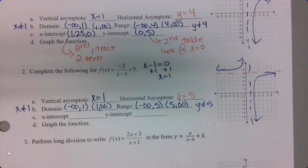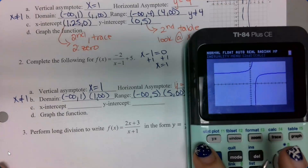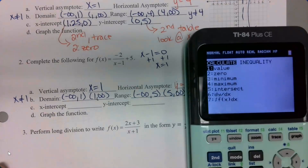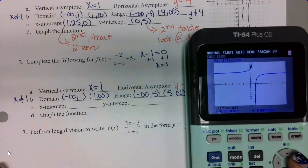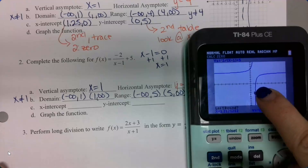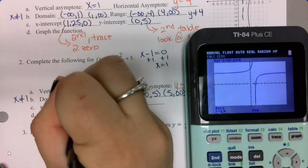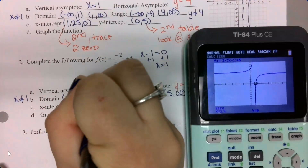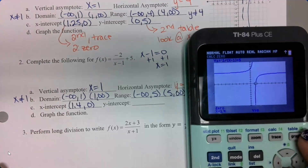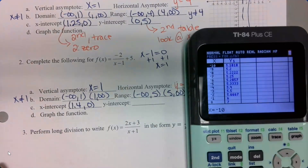My x-intercept: I go 2nd, trace, choose 0. I arrow my cursor over until it's on the left side of where it's crossing the x-axis, press enter, arrow over, cross it, and press enter. This gives me 1.40. To find my y-intercept, I go to my table and look for the y value when x equals 0, which is 7.